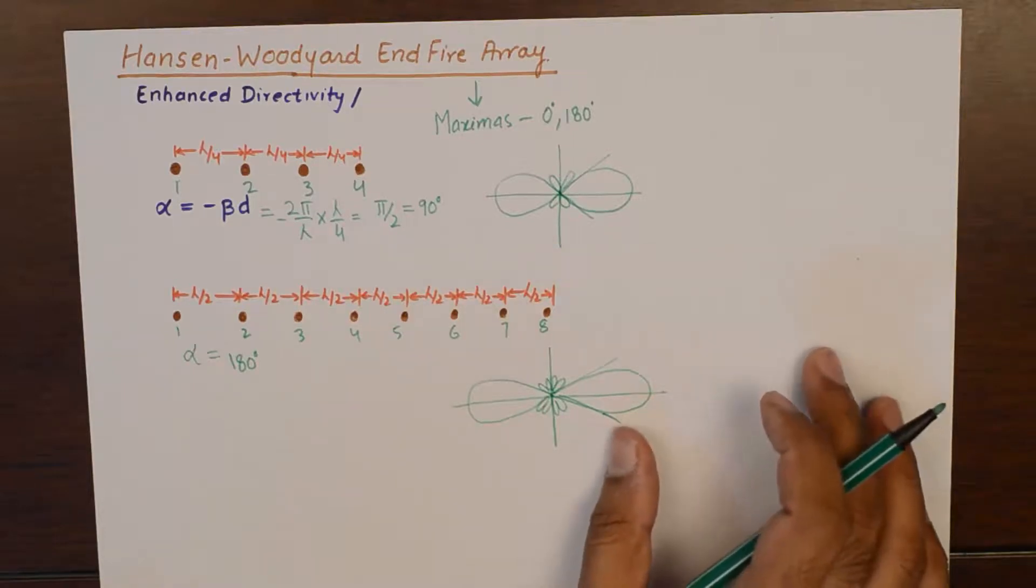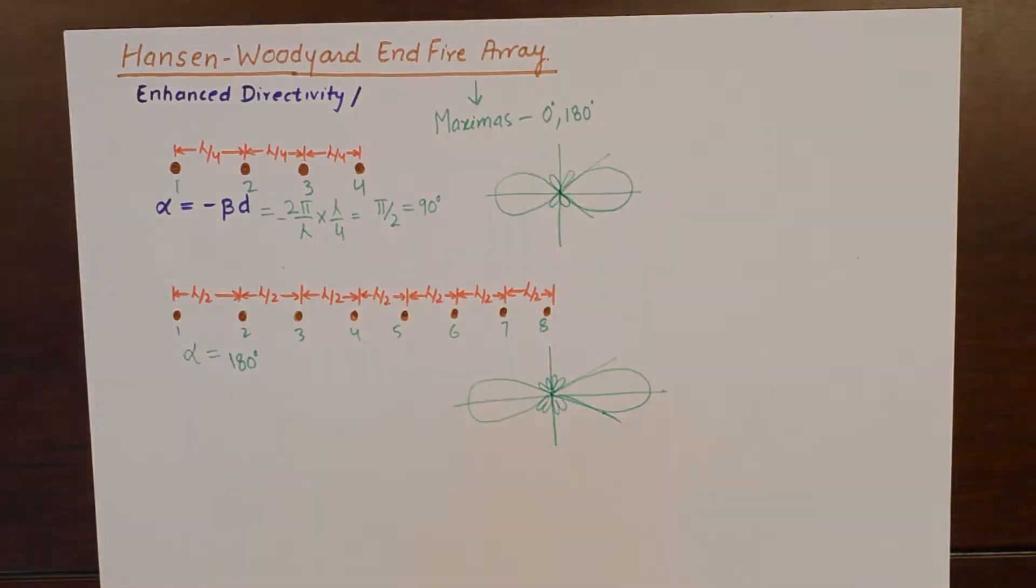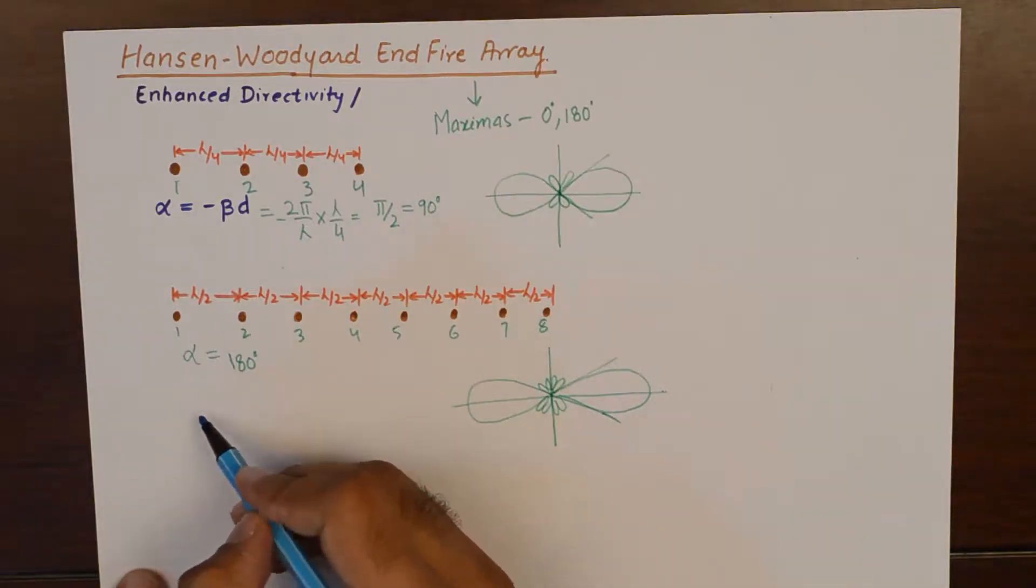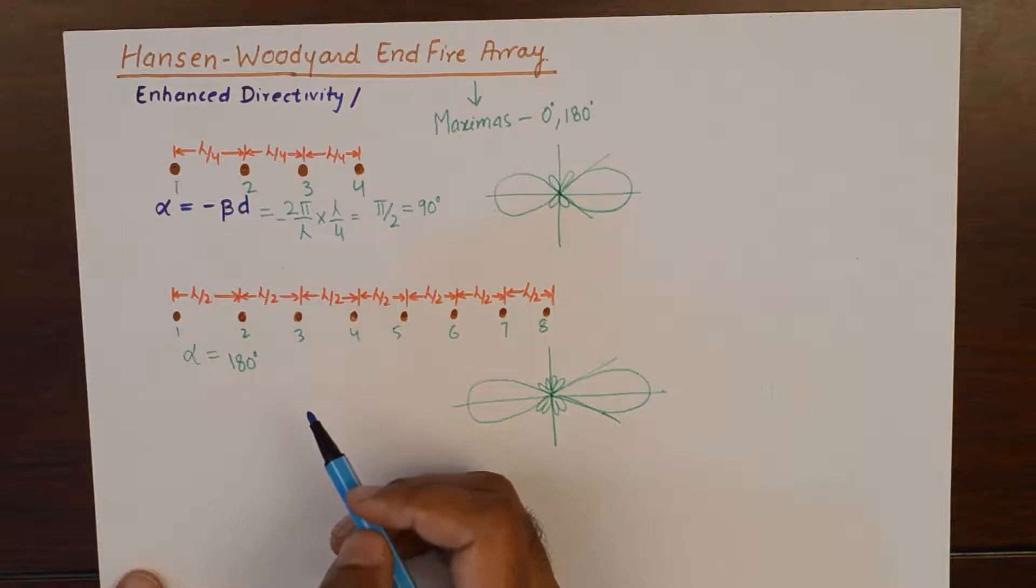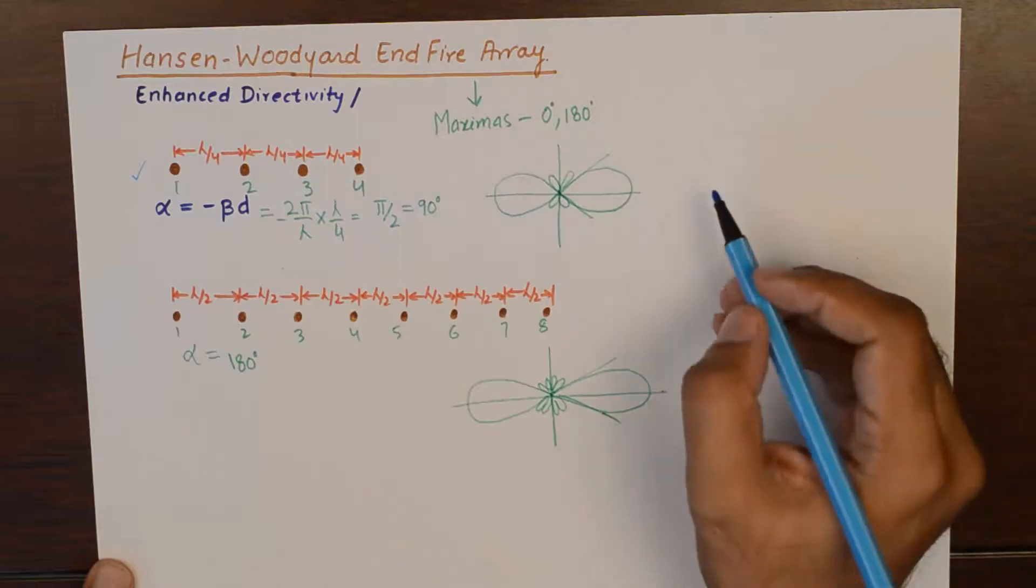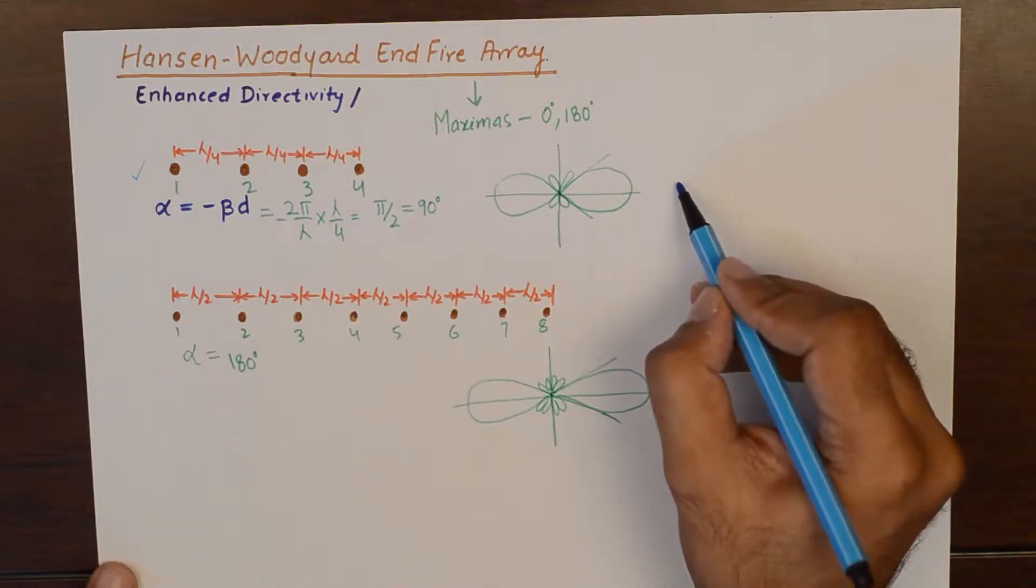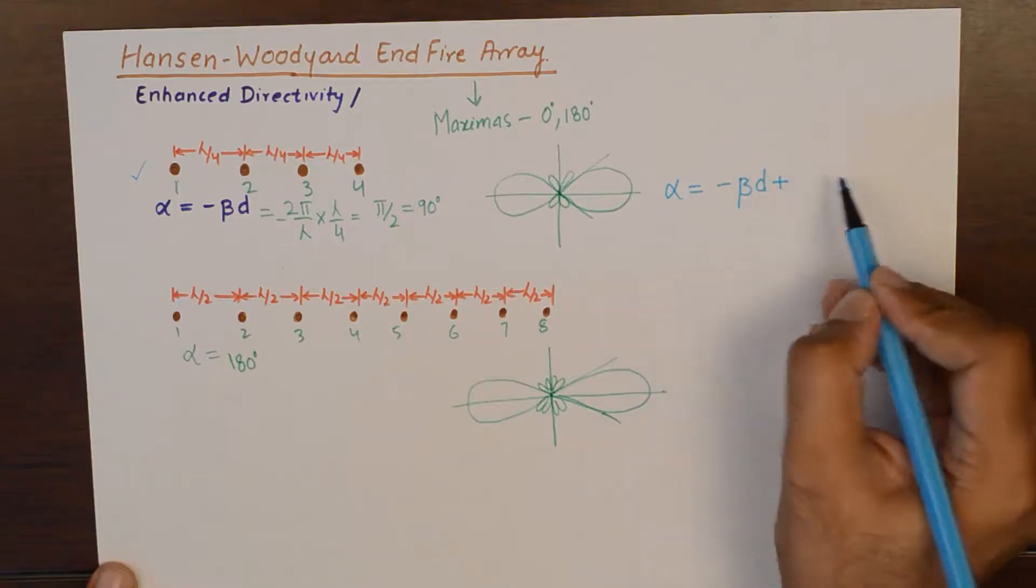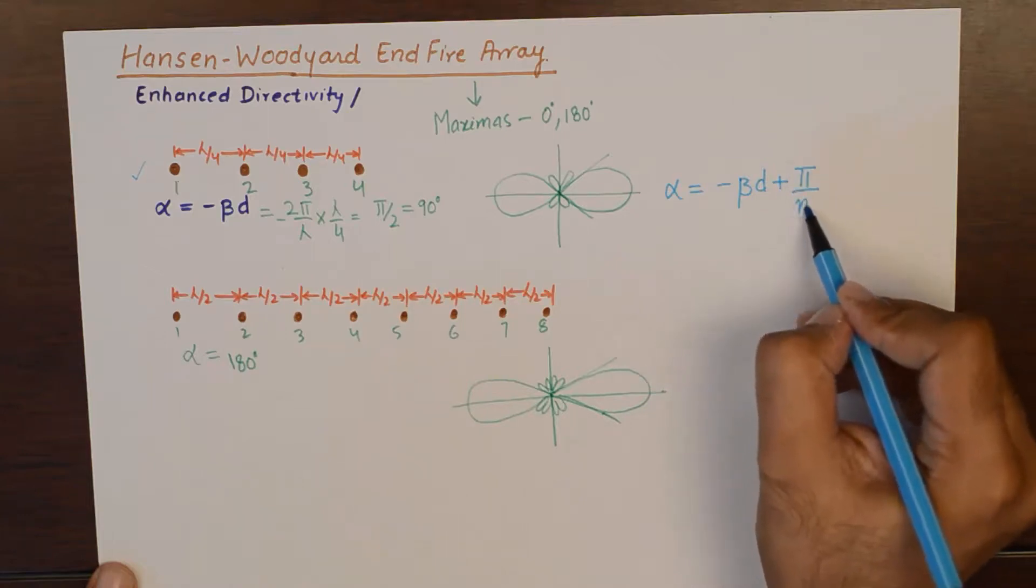Now, Hansen-Woodyard proposed that this alpha should be modified by a factor of pi by n. We should add that factor into alpha. So, if we want to convert this arrangement of array into Hansen-Woodyard, he suggested that alpha should be kept as minus beta d plus pi by n.